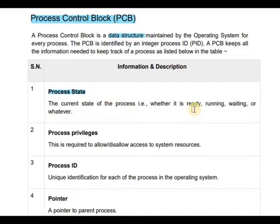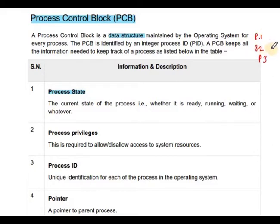We have already discussed process states. Suppose we have different processes: P1, P2, P3, and so on. P1 is in some state, P2 is in some state, P3 is in some state. Each process has its own PCB, and the state field in the PCB indicates the current state of that process.